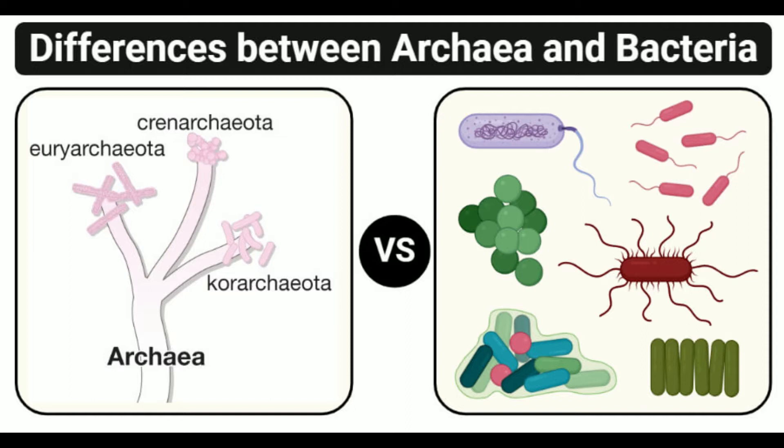Reproduction takes place through binary fission, budding, and fragmentation. Different methods like transformation, transduction, and conjugation are also available for the transfer of genetic materials.